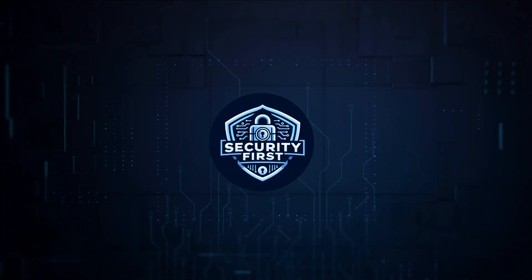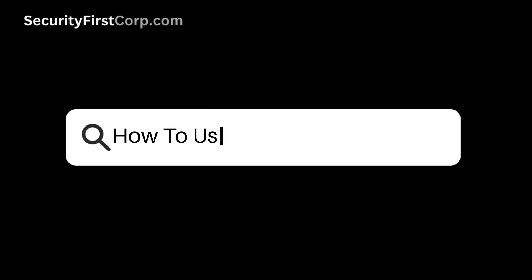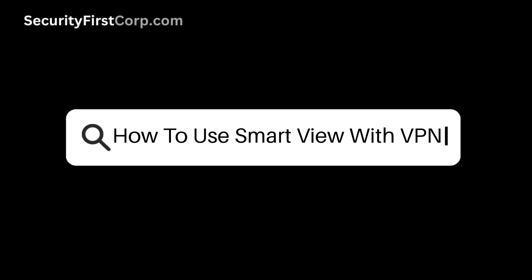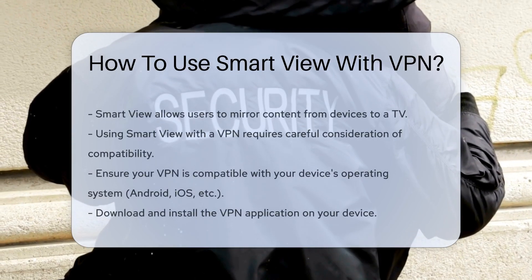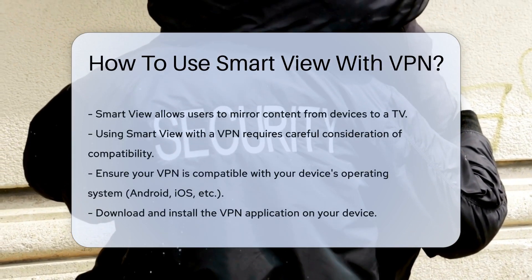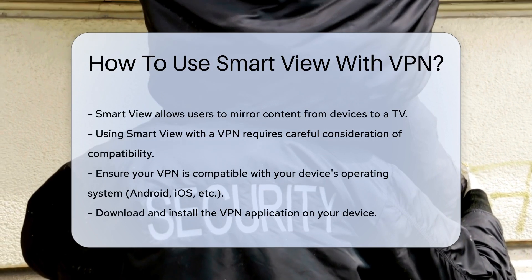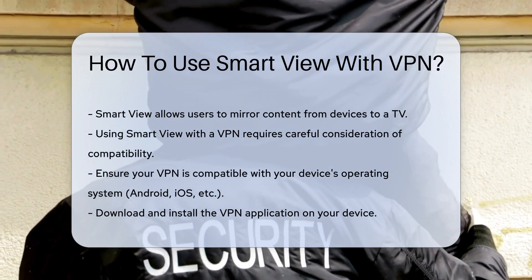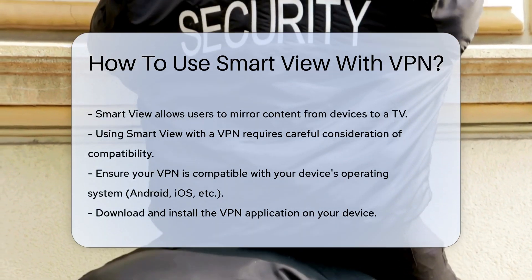Security First Corp. Safety through knowledge. How to use Smart View with VPN. Smart View is a feature that allows users to mirror content from their devices to a TV. However, using Smart View with a VPN requires careful consideration of several factors.